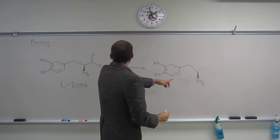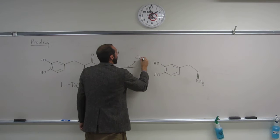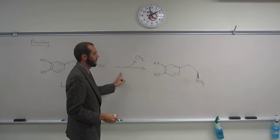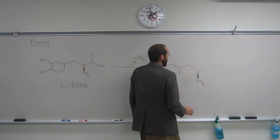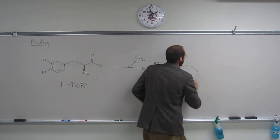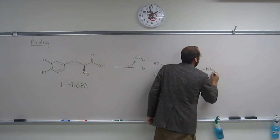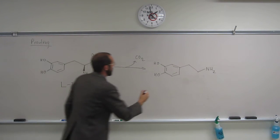If we think of it like this, this gets decarboxylated. Carbon dioxide is removed by DOPA decarboxylase. This is not the preferred way to write it. Let's draw it in normal view. The two structures are the same, and this is dopamine.